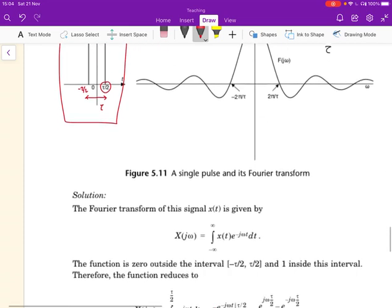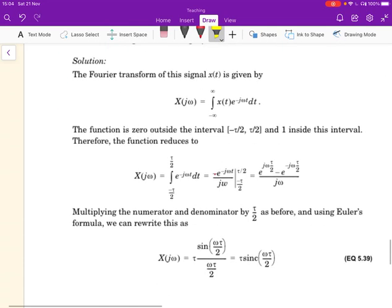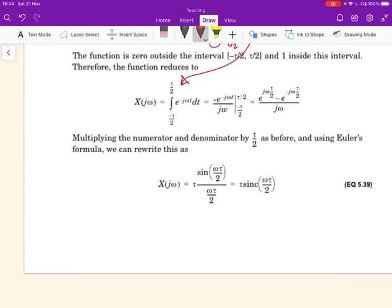To compute its Fourier transform, we need to plug it into the formula. The formula for the Fourier transform says x to omega is this integral. What we see right away is that it only has a value between minus tau over 2 to tau over 2, and in that regime it's 1. So this reduces to this simple integral shown here.